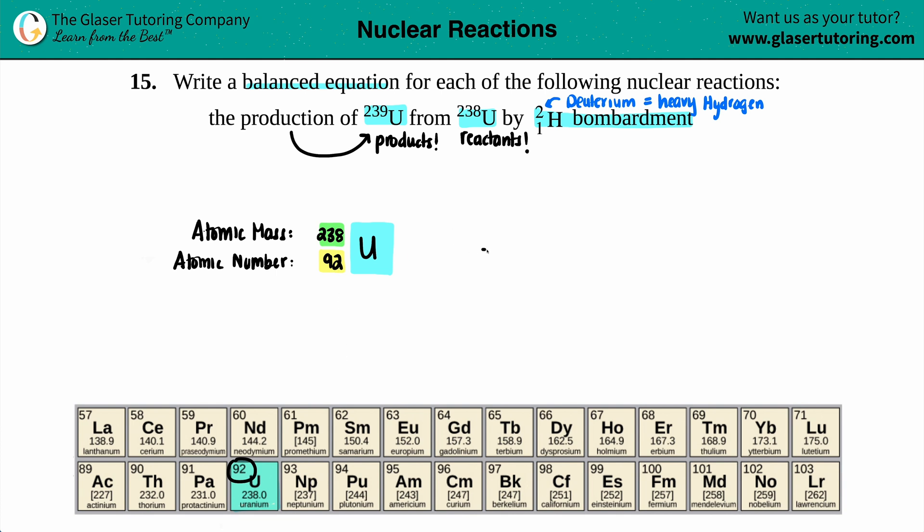Now we know that we just need to have the U-239 on the product side. It's still uranium, that's what they said, so capital U. But instead, the mass changed. The top now is 239. But since it's uranium, the atomic number has to be exactly the same, so 92.